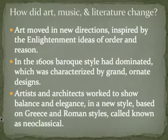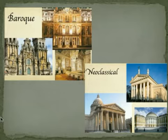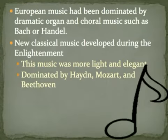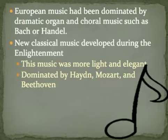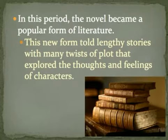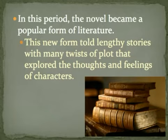Art, music, and literature changed significantly during this period. Art moved from baroque style — extremely gaudy — to neoclassical style, which is more clean-cut in architecture. Music shifted from deep, loud choral organ music to the lighter, more elegant music of Mozart and Beethoven. The novel also became popular as a new literary form, featuring long stories with twists and turns.